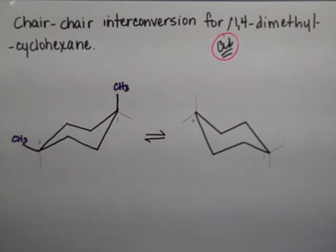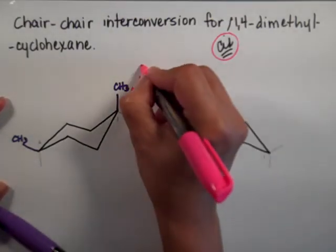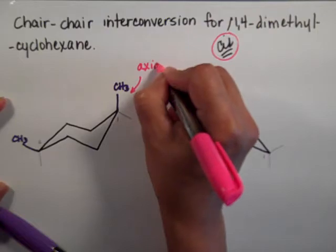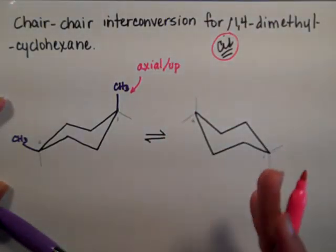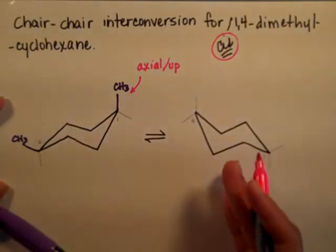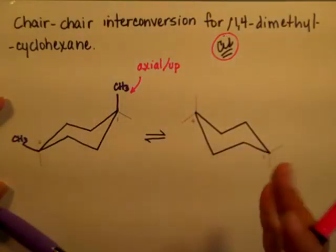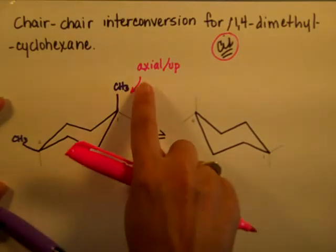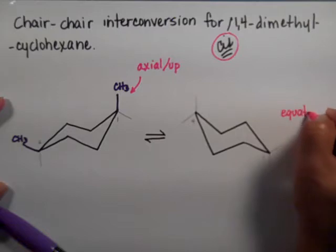Alright, how would you actually flip or interconvert a chair? Well, I like to process this. Always do the same thing because this one is axial and it's pointing up. When you flip the chair, axial goes to equatorial but if it's pointing up, it's still going to be pointing up in the other chair.